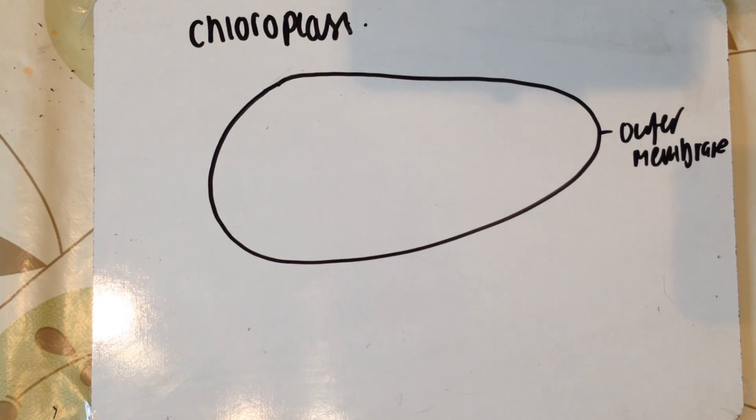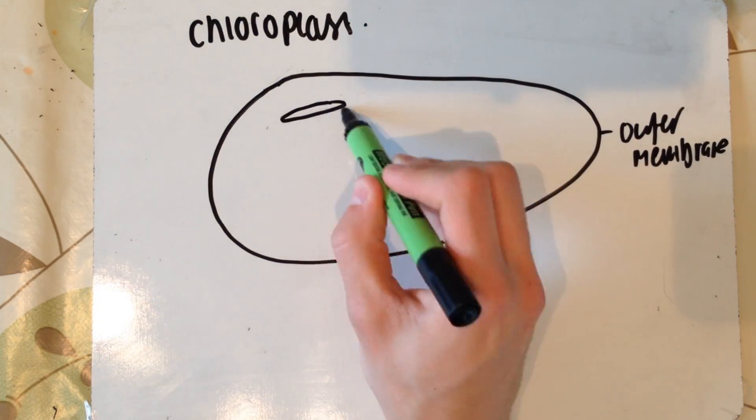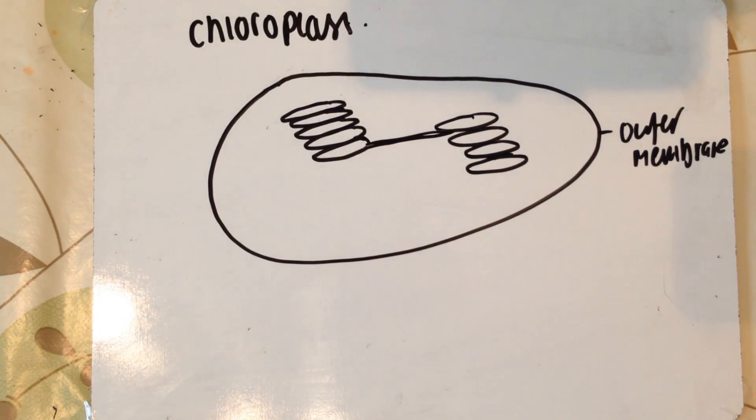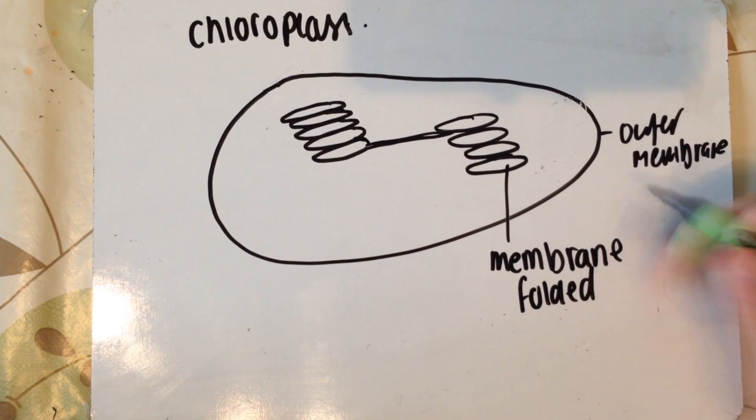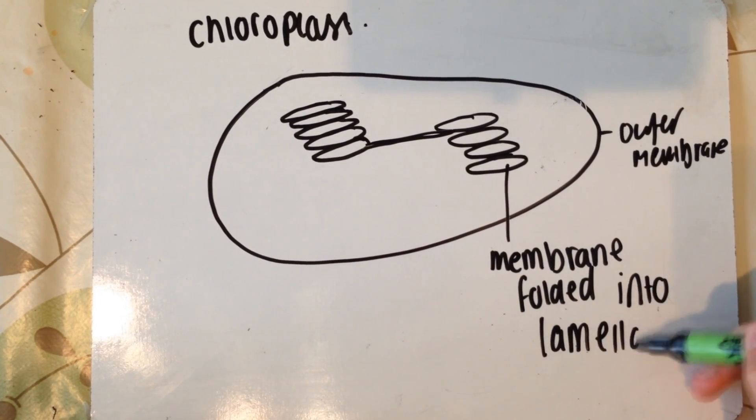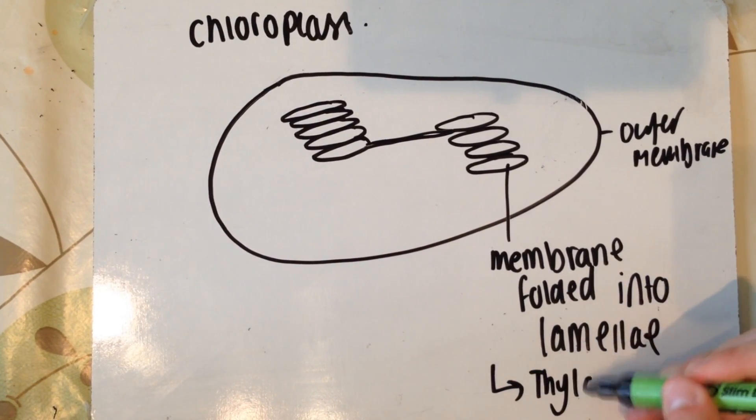The inner membrane in a chloroplast essentially does the same thing but doesn't fold to form the little mountainous ridges you saw in mitochondrion. It actually folds into disc shapes, and each one of these discs is known as a thylakoid.